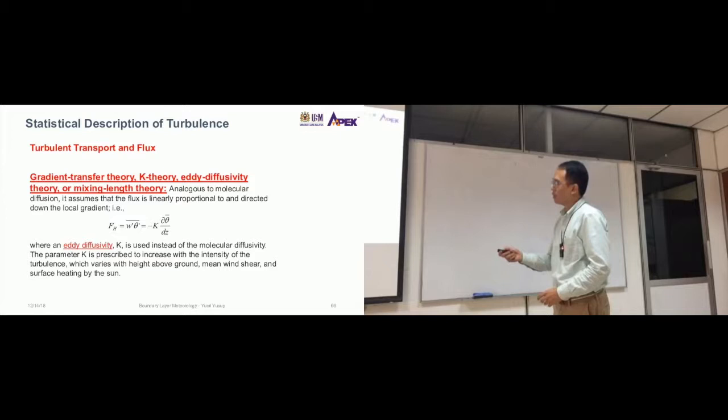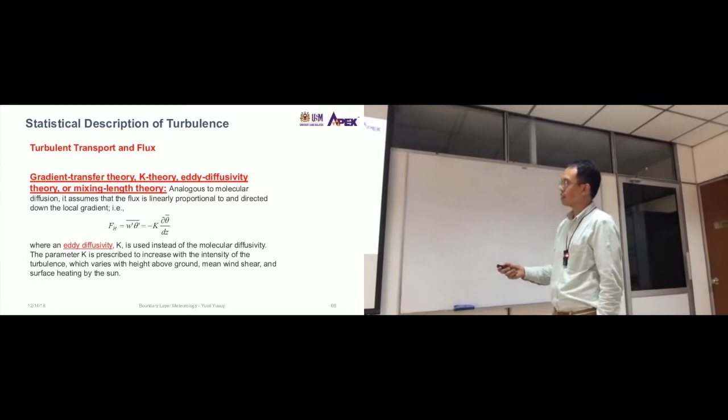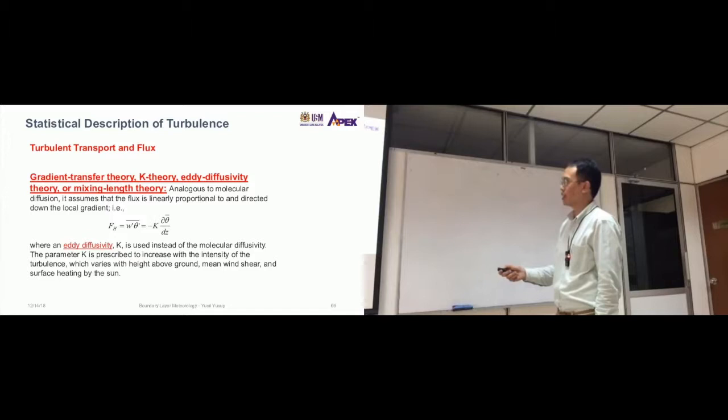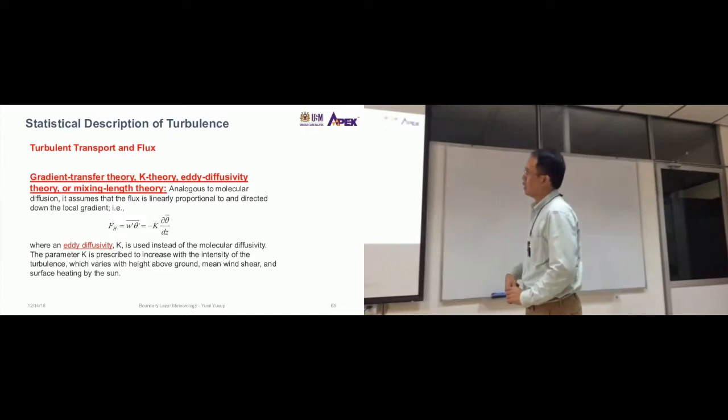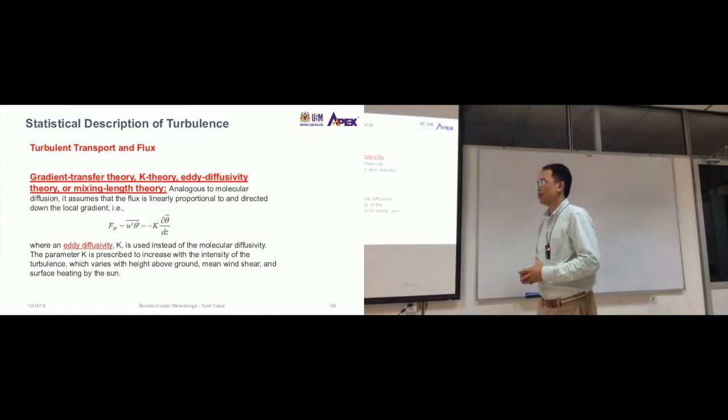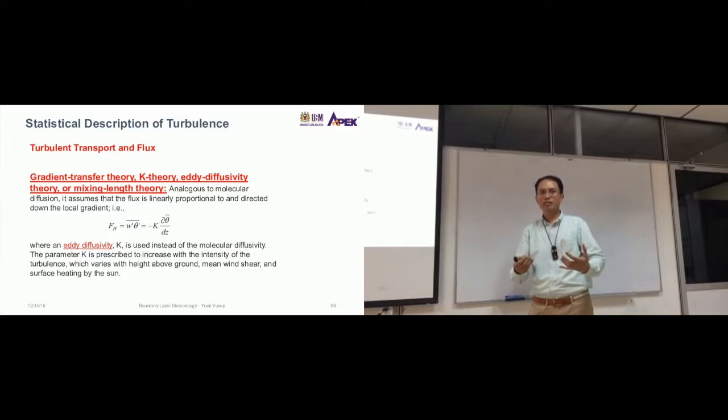These theories assume that flux is linearly proportional and directly related to the local gradient, following this main equation. This equation is not difficult to understand; it just simply states that you have bigger flux when the gradient is large. Does that make sense?